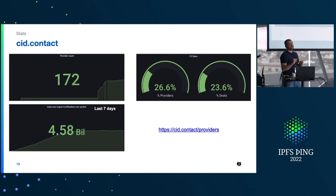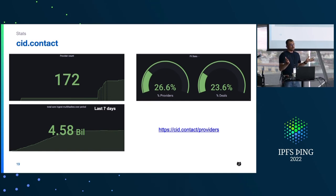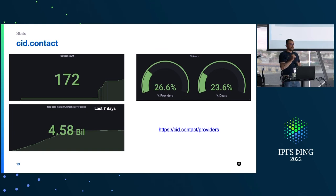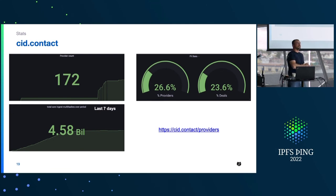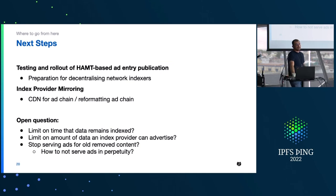A quick set of stats on cid.contact: right now we have 172 providers, about 26% of them are Filecoin providers, and in the last seven days we've ingested about five billion multihashes. You can see the list of all providers on cid.contact using the linked URL, which shows the CID of the latest processed advertisement, when it was processed, the peer ID, and more.